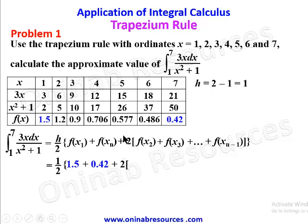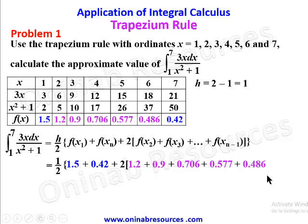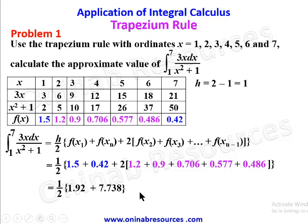Then plus 2 times the remaining values between the first and last: 1.2 + 0.9 + 0.706 + 0.577 + 0.486. Simplifying: 1.5 + 0.42 = 1.92, and the sum of the middle values multiplied by 2 gives 7.738. Adding and dividing the result by 2 gives the final answer of 4.829. That's the end of solution to problem one.